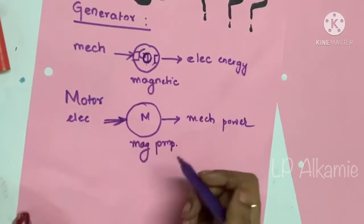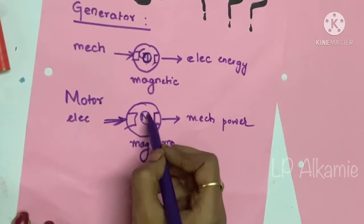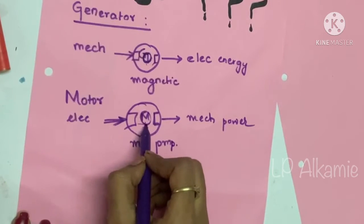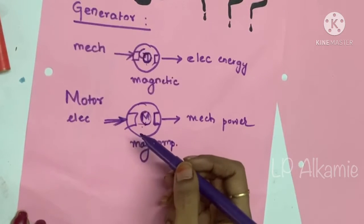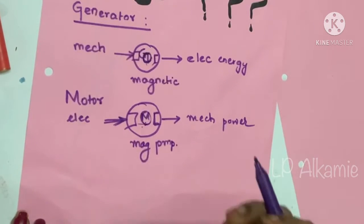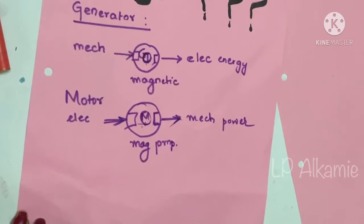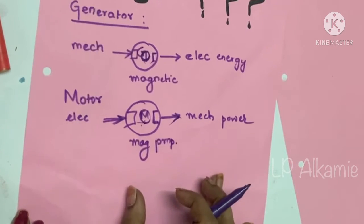Again here there are two magnets, and in center there will be the conductors. Through these conductors we are giving the electricity, and when this current carrying conductor is placed in this magnetic field, a torque is exerted on the rotor which is being taken at the output, that is the mechanical power. Again here the medium of conversion is magnetic field.